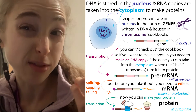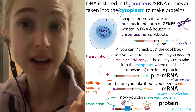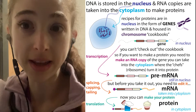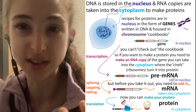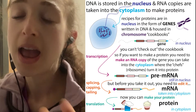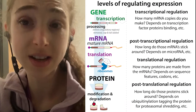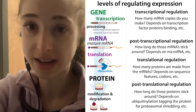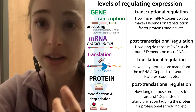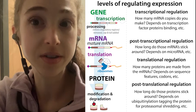Basically every cell in your body, with the exception of some red blood cells and immune cells, has your genetic blueprint — your genome — the instructions for making everything your body would ever need in terms of functional RNAs and proteins. But your cells are going to make these things in different amounts because not all the cells are going to need the same thing — your brain cells are going to need different things than your skin cells.